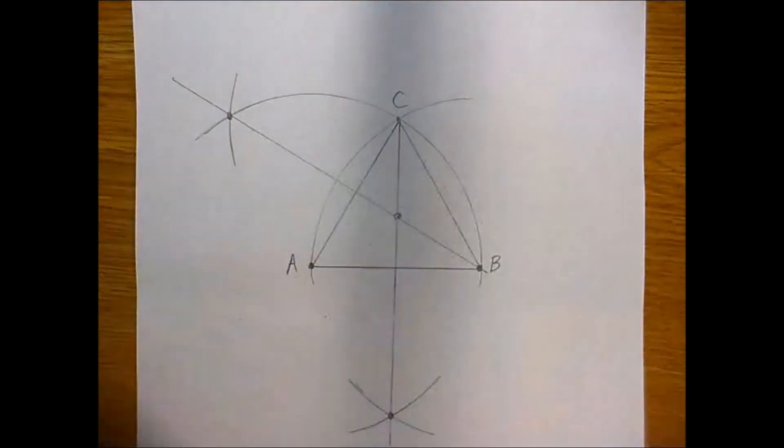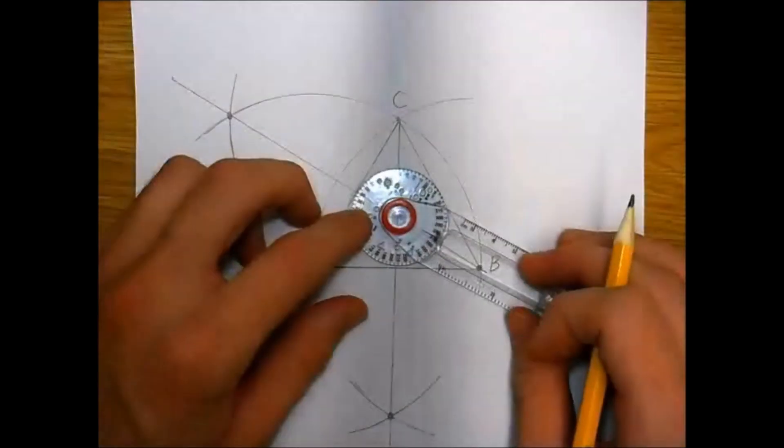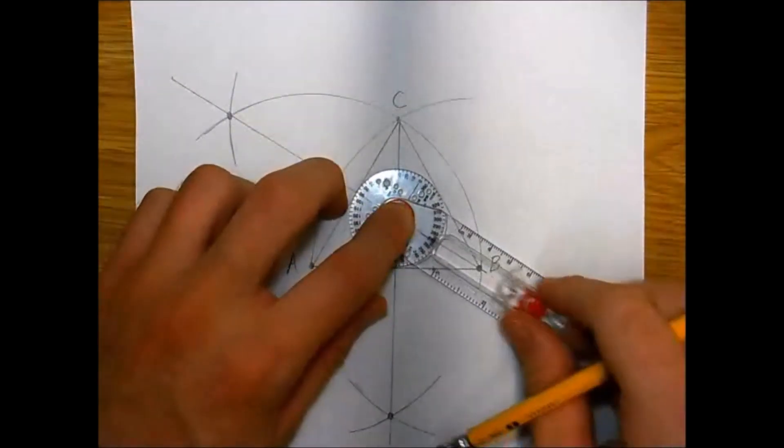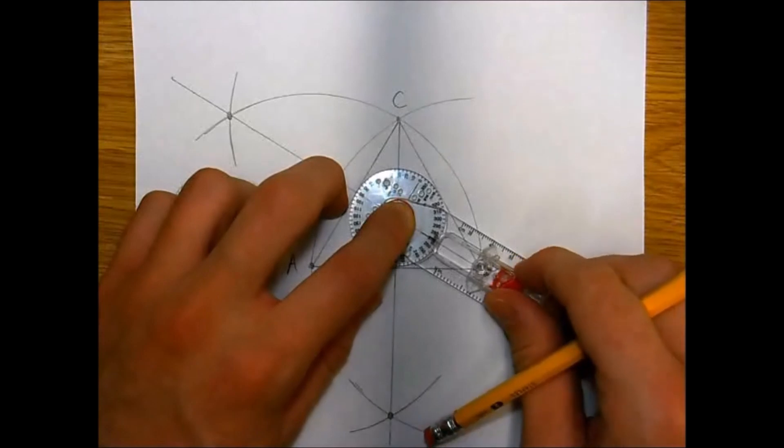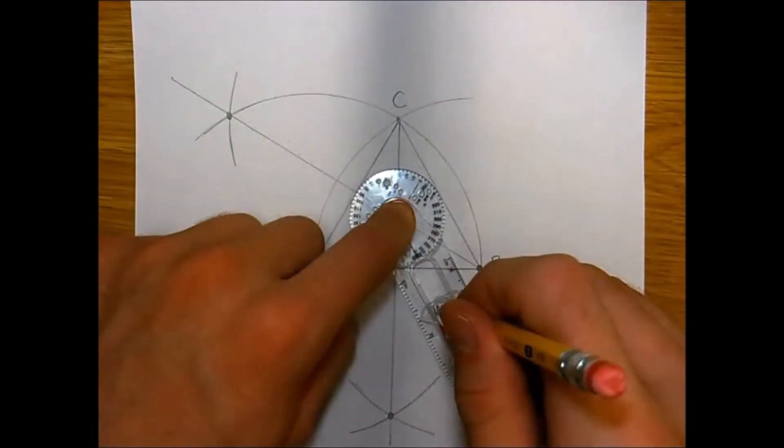Where the two perpendicular bisectors intersect is called the circumcenter. In theory, if we constructed a third perpendicular bisector through BC, it should meet exactly at the circumcenter.